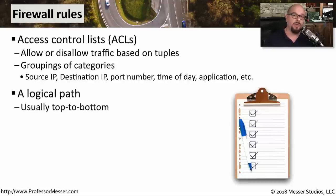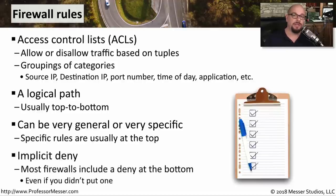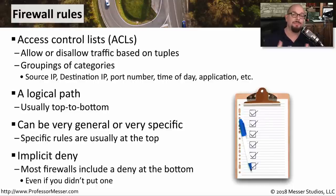Normally, the logic of a firewall starts with the first rule. If your traffic matches that rule, the firewall doesn't need to look any further down the rule base. If it doesn't match, it goes to the second rule, then the third, and so on. These rules can be very specific or very general, but as a rule of thumb, we usually put the most specific rules at the top. Most access control lists and firewall rule bases are written with an implicit deny — meaning if no rule matches a particular traffic flow, the default is to deny that traffic, even without an explicit deny rule at the bottom.